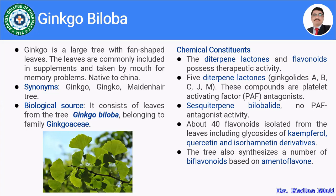The synonyms for ginkgo biloba are ginkgo and maidenhair tree. The biological source of ginkgo consists of the leaves obtained from the tree ginkgo biloba, belonging to the family Ginkgoaceae. This is the biological source of ginkgo biloba.